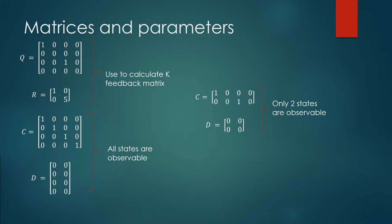But first, we want to look at the system when all the states are available for feedback. So our C matrix is an identity matrix, and our D matrix is 4x2 because we have four outputs and two inputs. Then we want to use a different C matrix when only two states are observable. Here, we assume that the angular velocity and rotational velocity are not observable. The D matrix also changes to a 2x2.